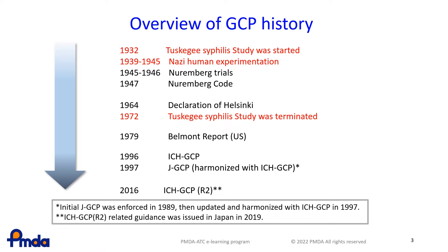This slide shows significant incidents and changes in regulations or important opinions related to clinical ethics. In the old days, especially under war conditions such as World War II, there was much human experimentation conducted in an inhumane manner. The Tuskegee syphilis study and Nazi experimentation are shown as examples, but there were many other similar cases all over the world. In parallel with those cases, regulations or declarations addressing those issues were published.